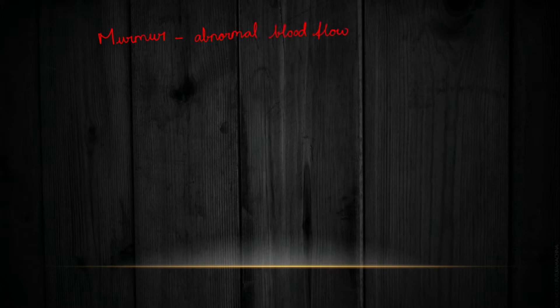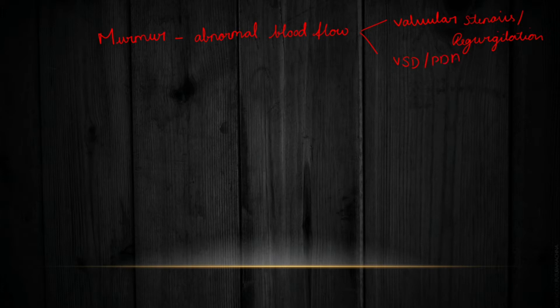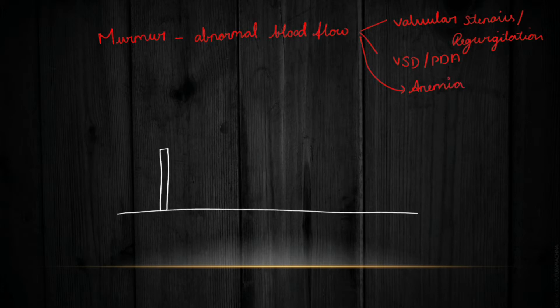A murmur is nothing but a sound produced due to any abnormal blood flow. This abnormal blood flow may be due to a lot of reasons like valvular stenosis or regurgitation, any anatomical disturbances like VSD or PDA, and it can also be seen in systemic diseases like anemia.